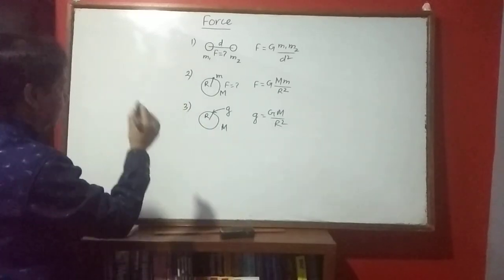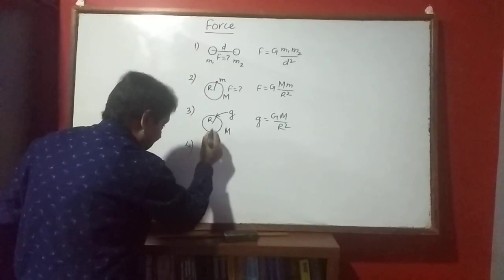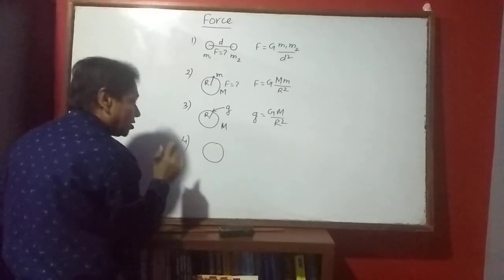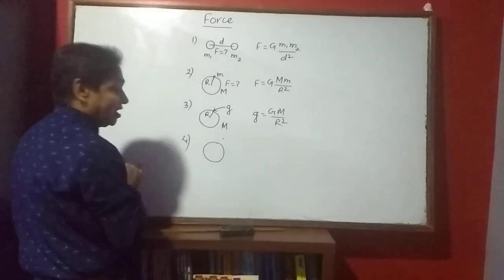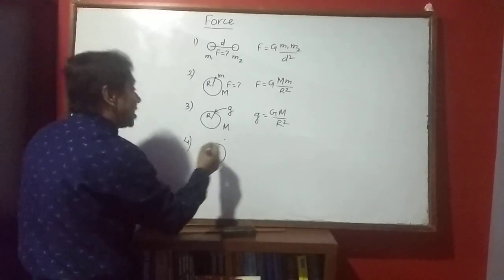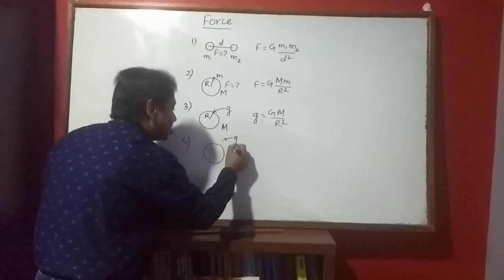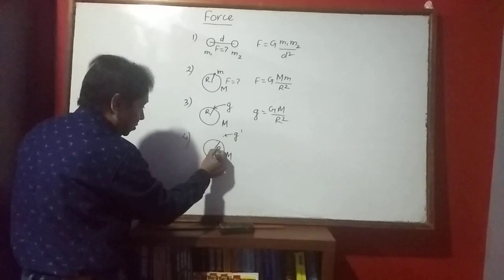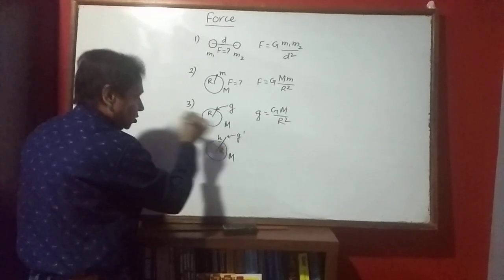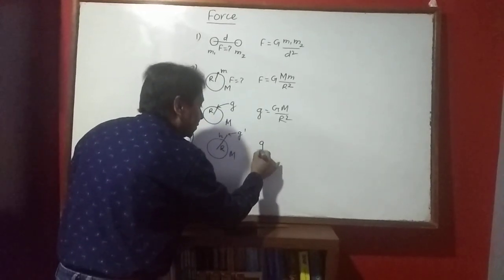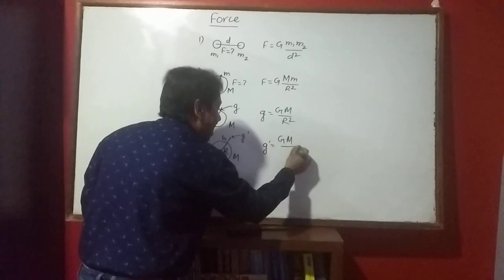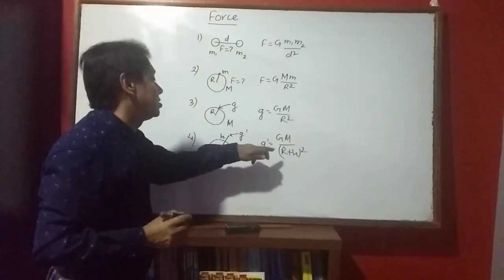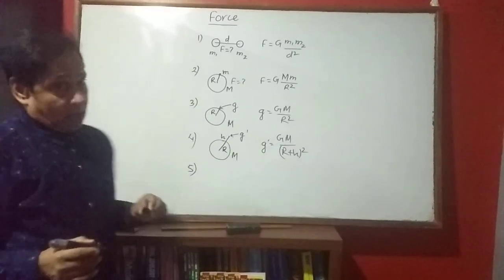The next equation is for the same case — a huge heavenly body — but now acceleration due to gravity has to be calculated not on the surface but at a certain height h above it. If the radius R and height h are both given, we use: g' = G·M / (R + h)². This equation gives acceleration due to gravity at a certain height.